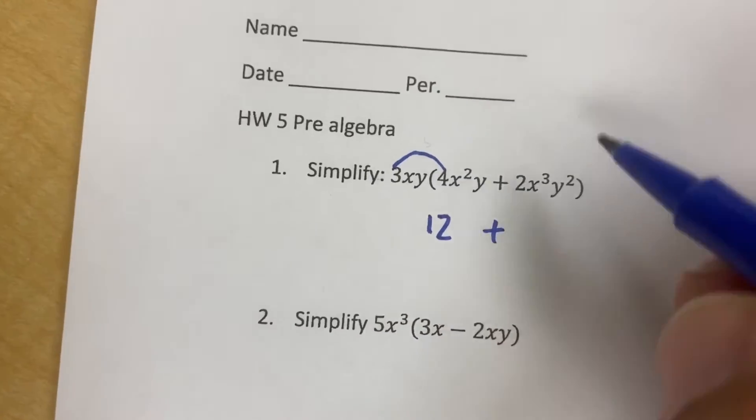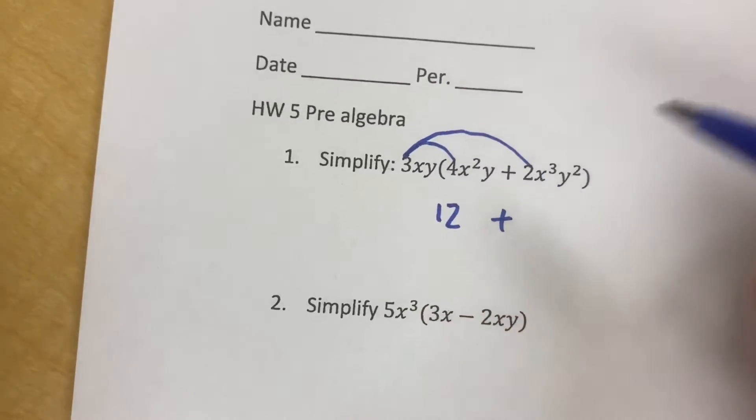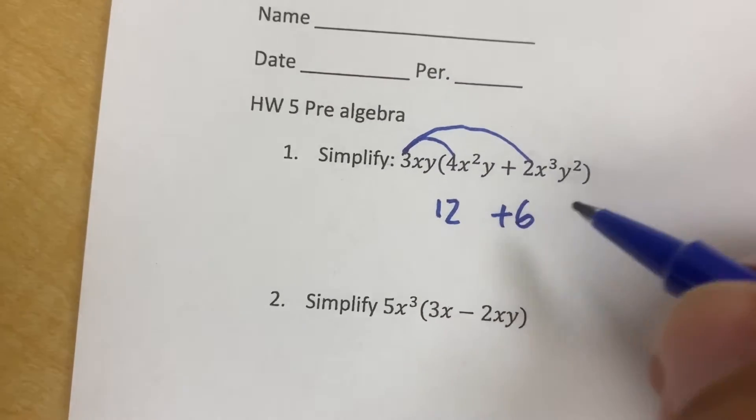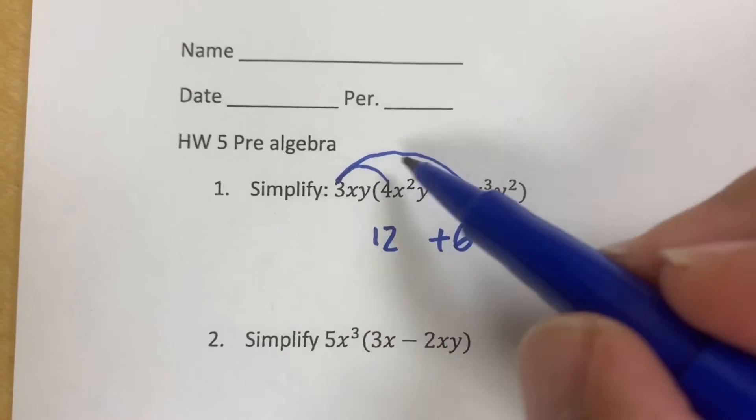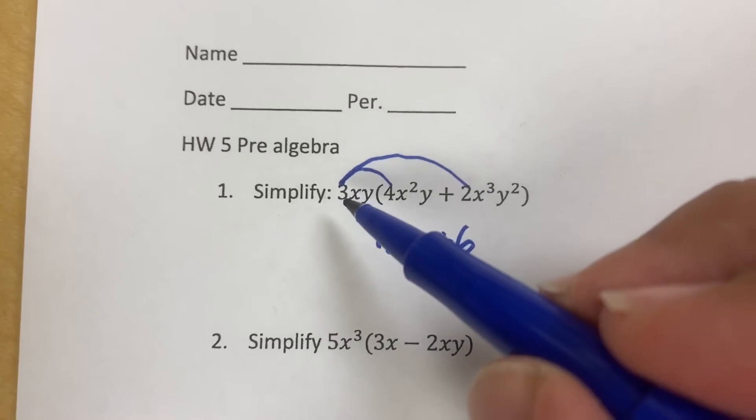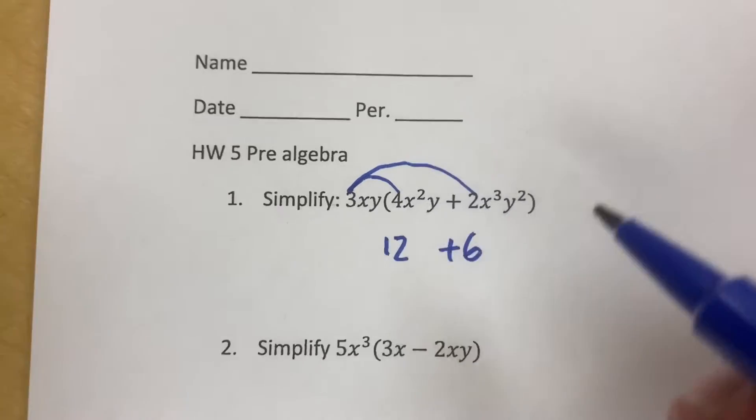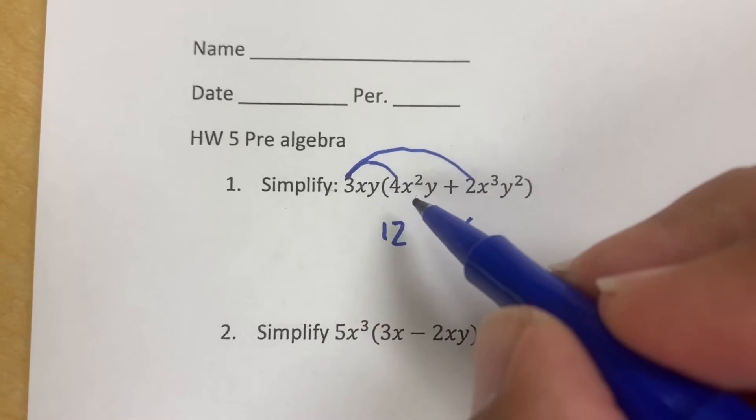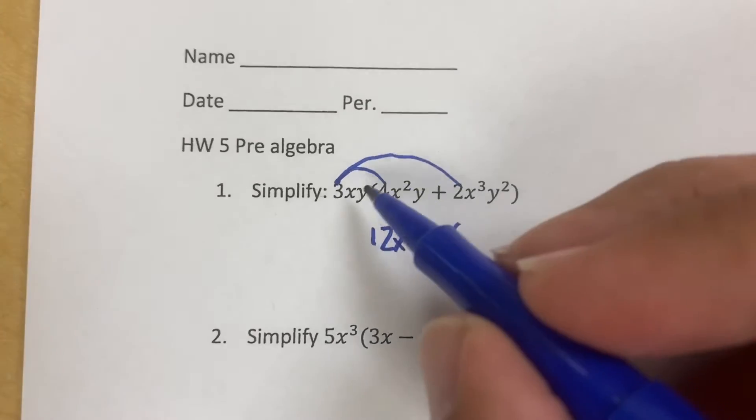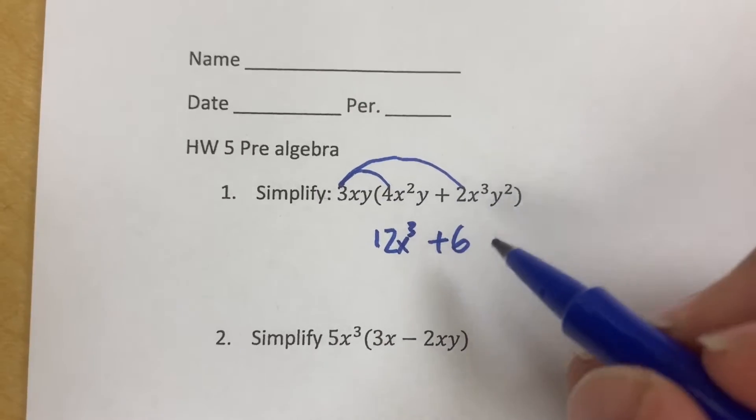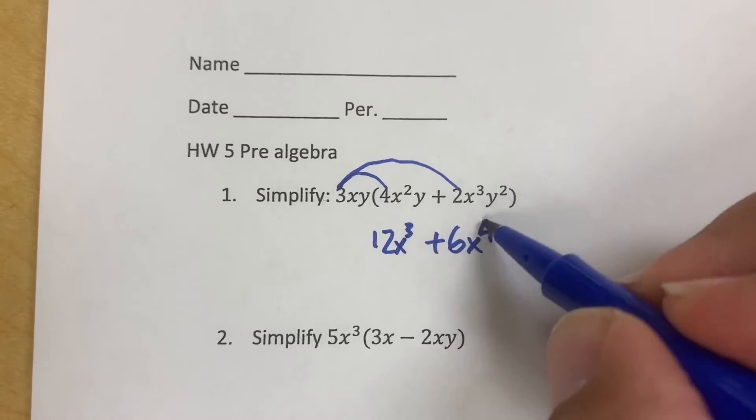Plus sign stays here. 3 times the 2, that's going to make a 6. Now, the x is now multiplying with everything here, which causes the x to add itself to the exponent. So x times x squared is going to make x to the third. x times x third is going to make x to the fourth.